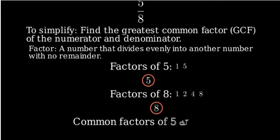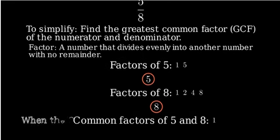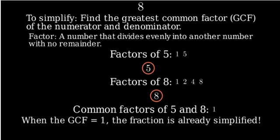Now let's compare the factors of 5 and 8 to find any common factors. Looking at our lists, we can see that 1 is the only number that appears in both lists. This means that 1 is the greatest common factor of 5 and 8. When the greatest common factor is 1, that means the fraction is already in its simplest form.